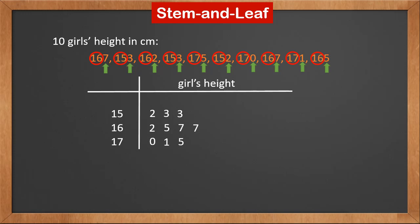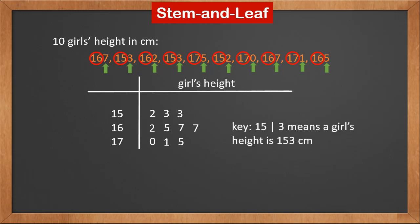The last important thing is to put in the key, which tells the meaning of those numbers. '15 | 3' means a girl's height is 153 centimeters — you can pick any number for the key. That completes the stem and leaf diagram.